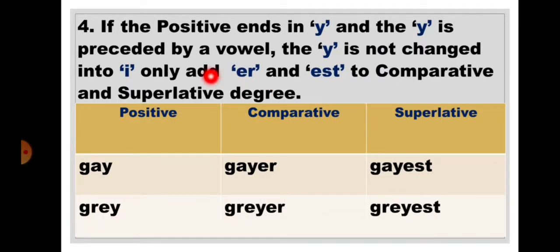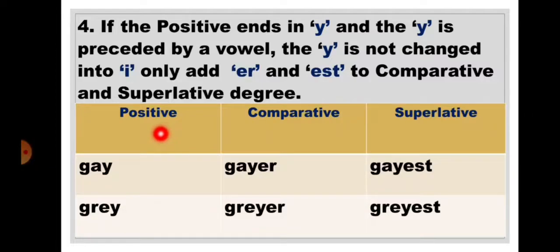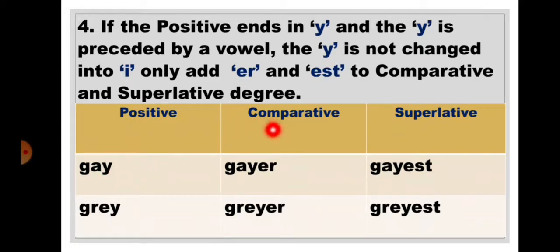Rule 4: If the positive ends in Y and the Y is preceded by a vowel, the Y is not changed into I — only add ER and EST for the comparative and superlative degree. For example: gay — the word ends with Y and before that it has a vowel A. So we are not replacing Y with I; we just add ER to get gayer, and EST to get gayest. Gray → grayer → grayest.